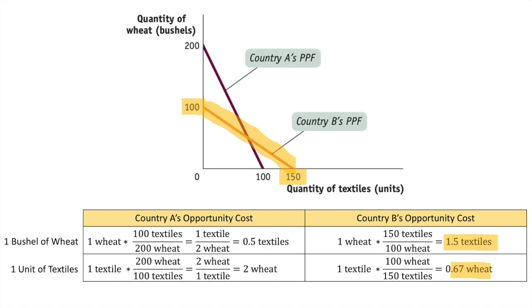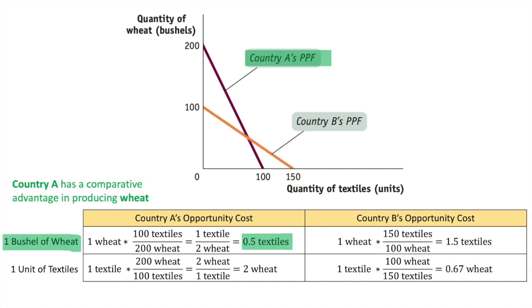From this table, we can conclude that for producing wheat, country A has more competitive advantage in production because its opportunity cost of textile is less than country B's.